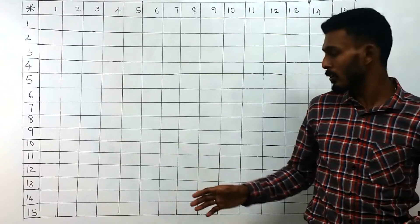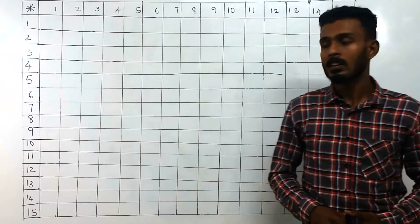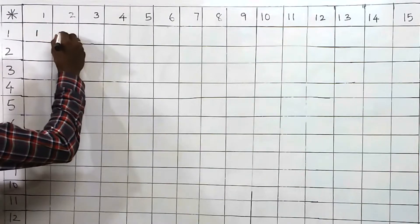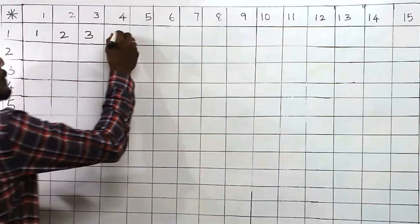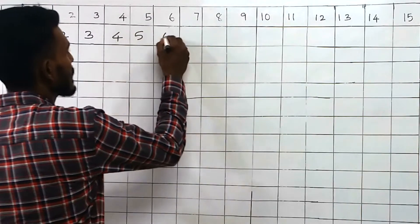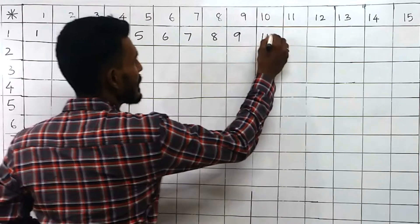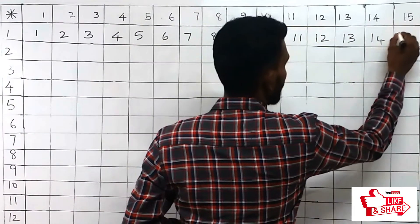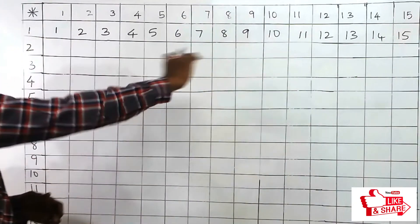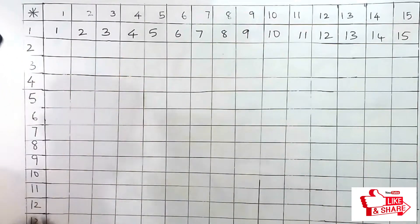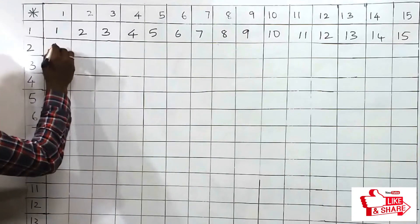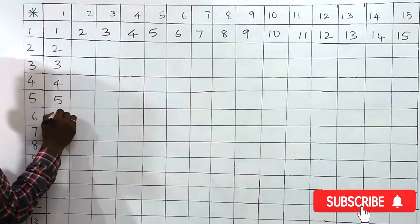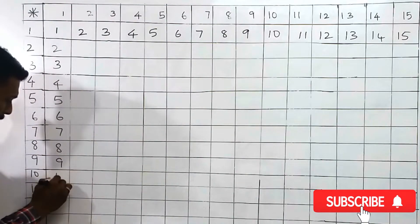On the first row, write down 1 to 14: that is 1, 2, 3, 4, 5, 6, 7, 8, 9, 10, 11, 12, 13, 14, and 15. Whatever you are writing in the row you have to write down in the column as well. That is, we have written 1 over here, so start from 2, 3, 4, 5, 6, 7, 8, 9, 10, 11, 12, 13, 14, 15.